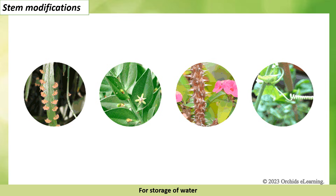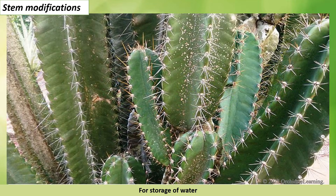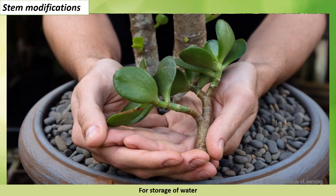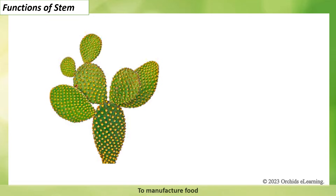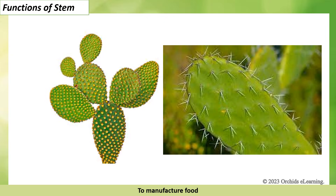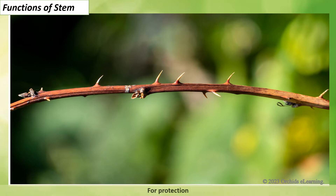Stem modifications: stems of certain plants are modified to perform special functions. For storage of water: stems of plants such as cactus and jade swell up to store water in them. To manufacture food: stems of some plants become flattened and leaf-like, like that of a cactus, and perform photosynthesis.